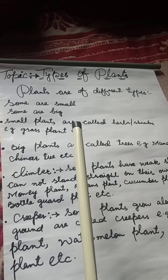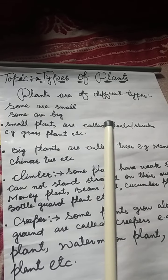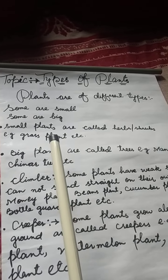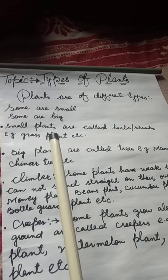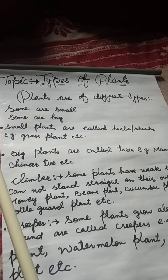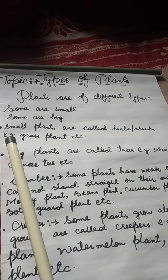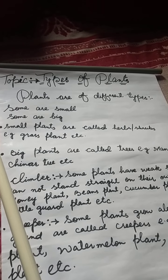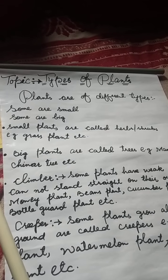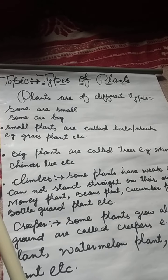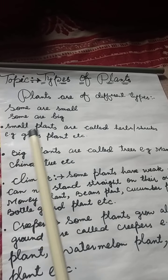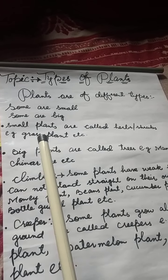Small plants are called herbs. Example: grass plant. Have you seen grass plant? Aapke garden mein ya bahar aap nikalate hain, waha pe chote chote grass ke poudhe hoté hain. Unko bolte hoon, wo aate hain small plants mein.